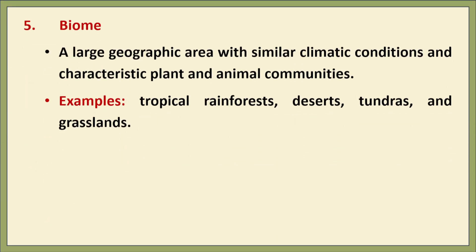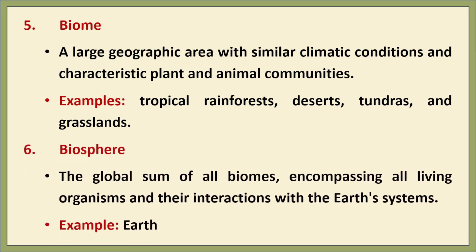The fifth level is biomes — large geographic areas with similar climate conditions, vegetation, and wildlife. Examples include tropical rainforest, desert, tundra, and grassland. Biomes shape the type of life that exists in a particular region.